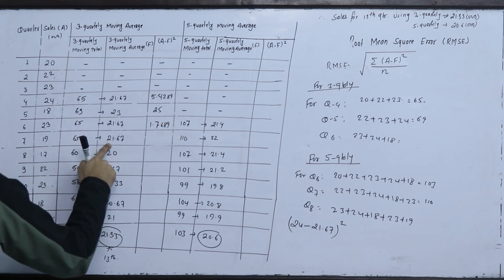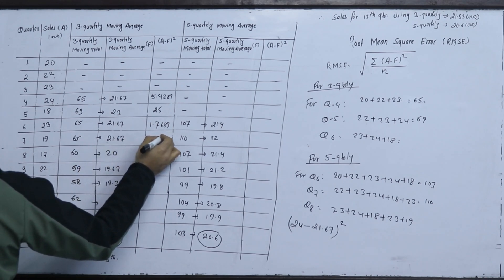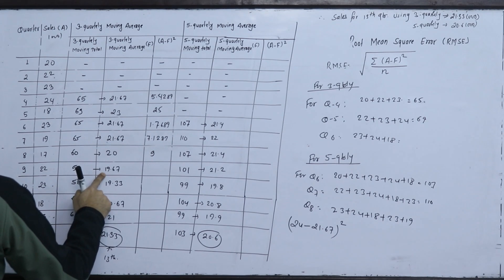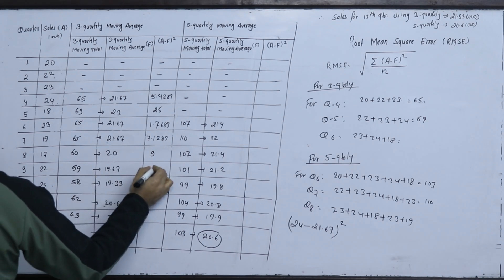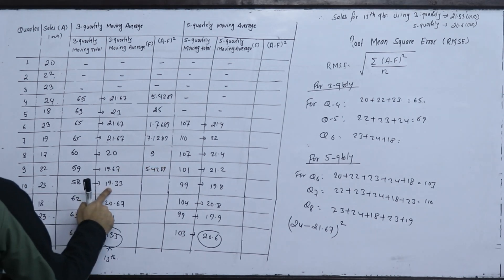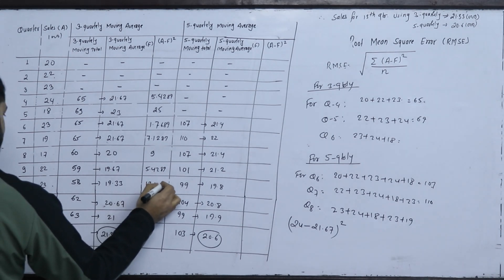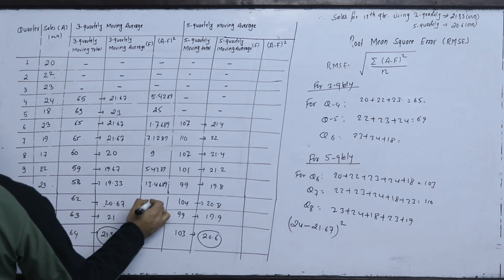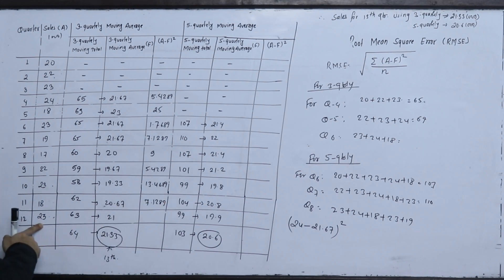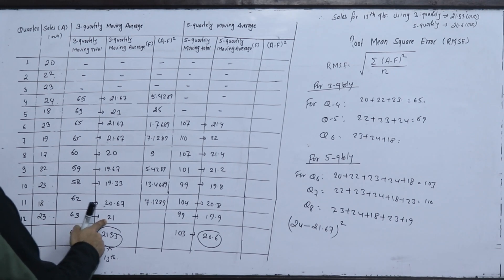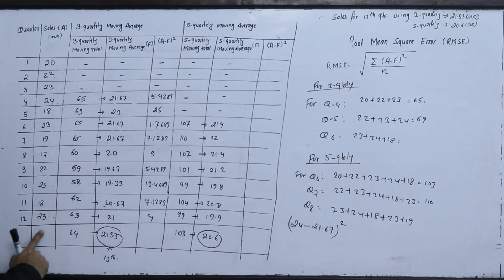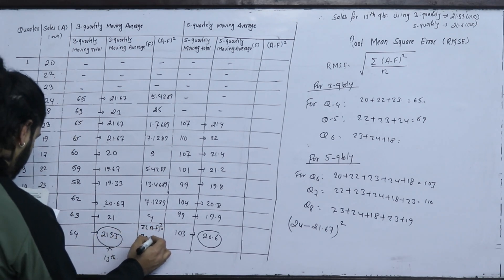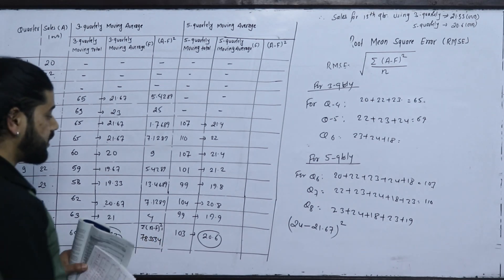Continuing the 3-quarterly A minus F squared values: 19 minus 21.67 gives 7.1289. 17 minus 21 gives minus 4, squared. 22 minus 19.67 squared gives 5.4289. 23 minus 19.33 squared gives 13.4689. 18 minus 20.67 squared gives 7.1289. 23 minus 21.33 squared.